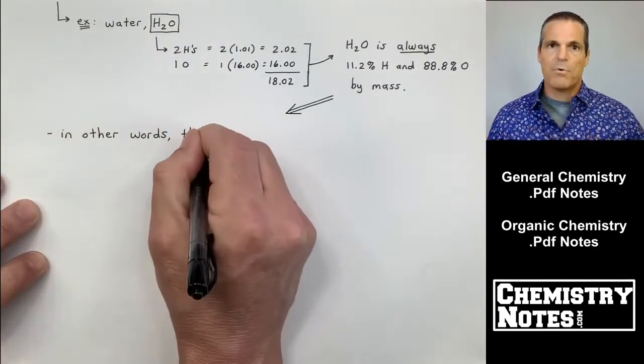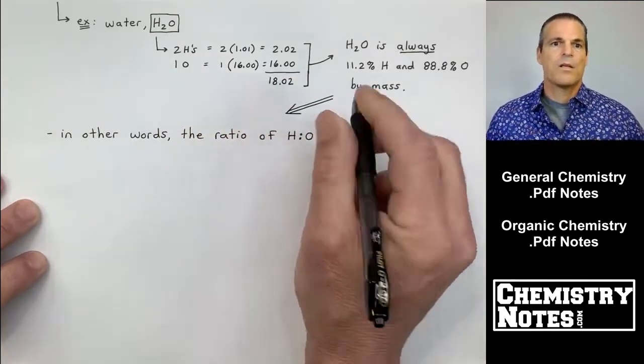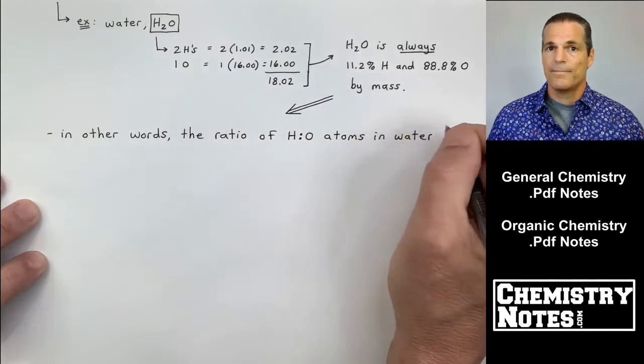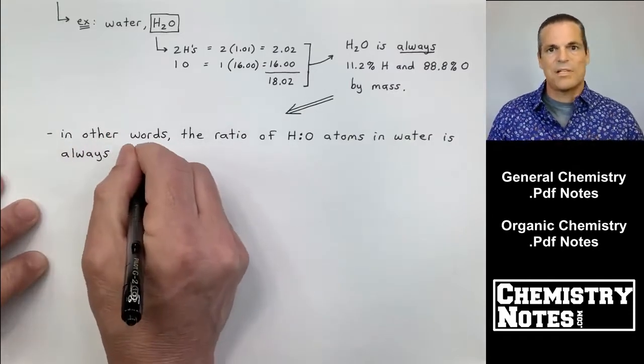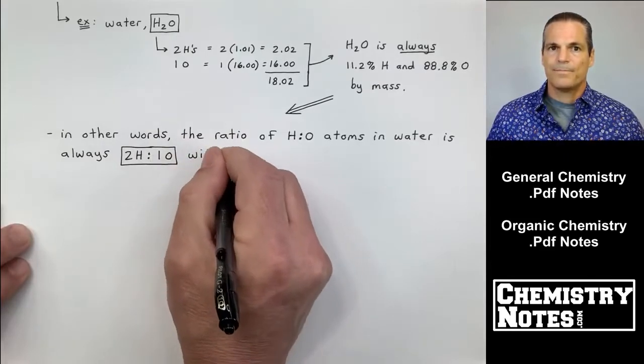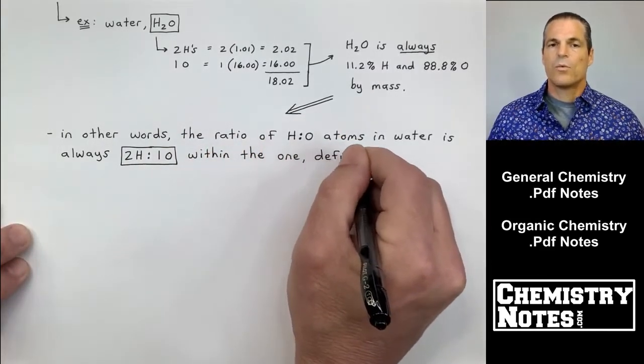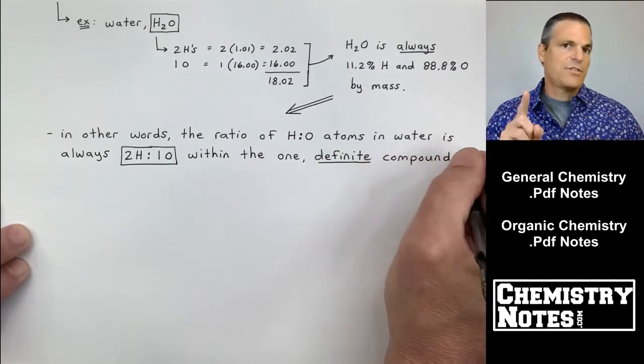I can put it much more simply, and I'm going to do it right now. It says, in other words, the ratio of hydrogen to oxygen atoms in water, no matter how much the sample size, how small the sample size, how large, the ratio is always two hydrogens to one oxygen.